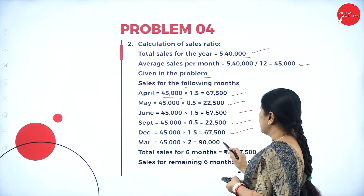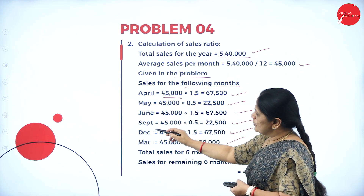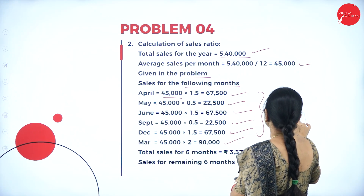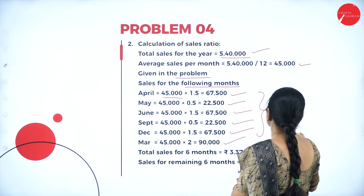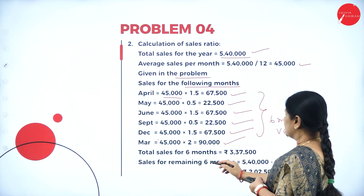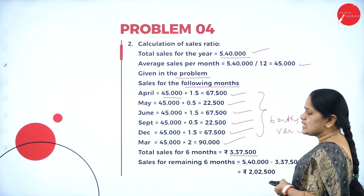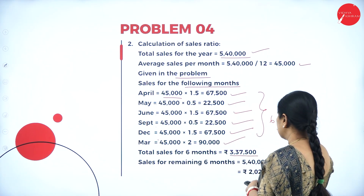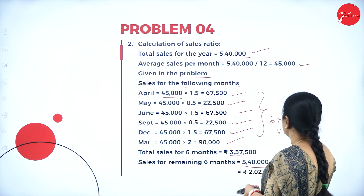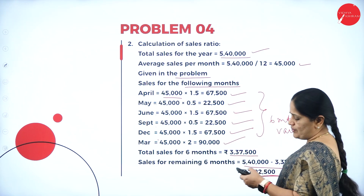For December and March there are also variations, making a total of 6 months with variations in sales. The total sales for these 6 months adds up to 3,37,500. So the sales for the remaining months will be 2,02,500.